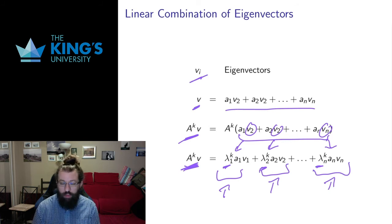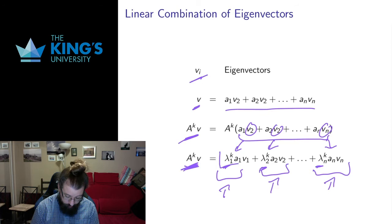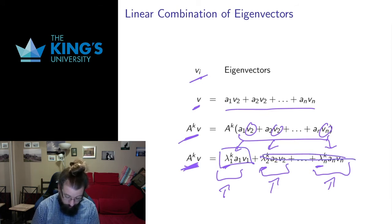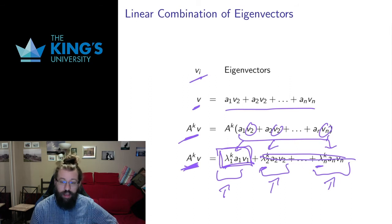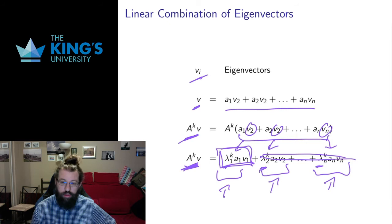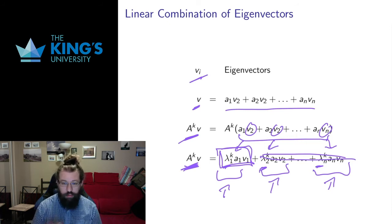Ideally, if only one component shows exponential growth and the others decay, then wherever we start we'll end up with long-term behavior governed by that one dominant eigenvalue. We have some theorems that guarantee this ideal situation, and I'll spend the rest of this video presenting those theorems, which form the theoretical background for the examples in videos 2, 3, and 4 this week.